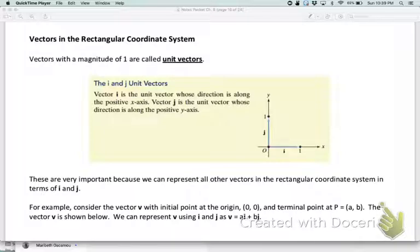The unit vectors i and j have a magnitude of 1. The unit vector i goes along the positive x-axis from 0 to 1, and the unit vector j is the vertical one that goes on the y-axis. They always have a magnitude of 1.